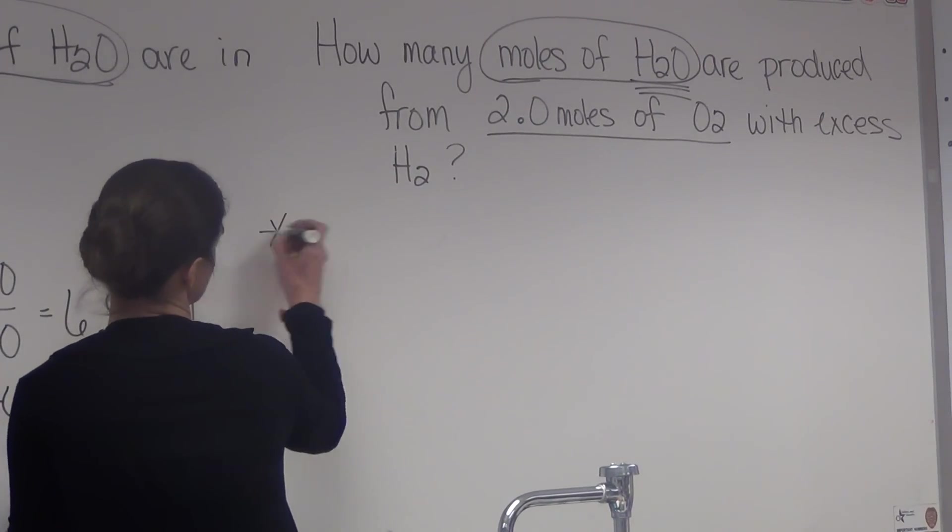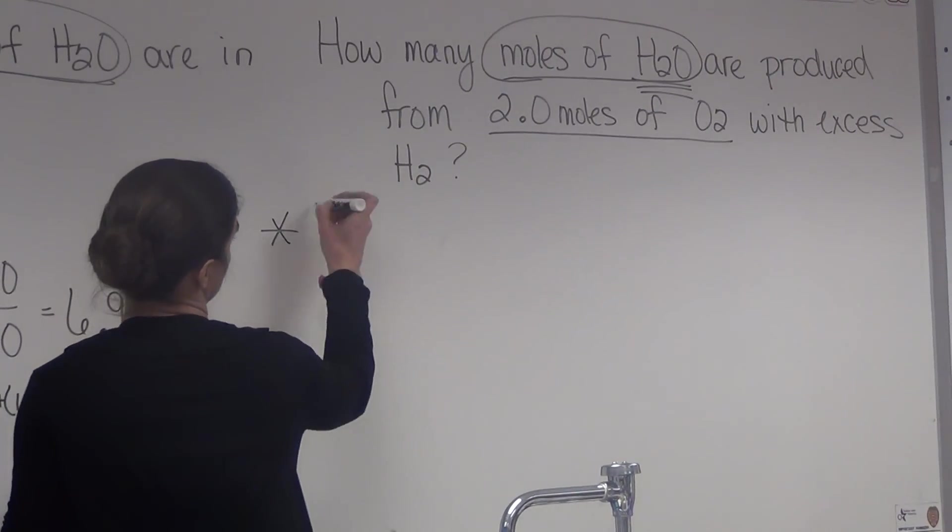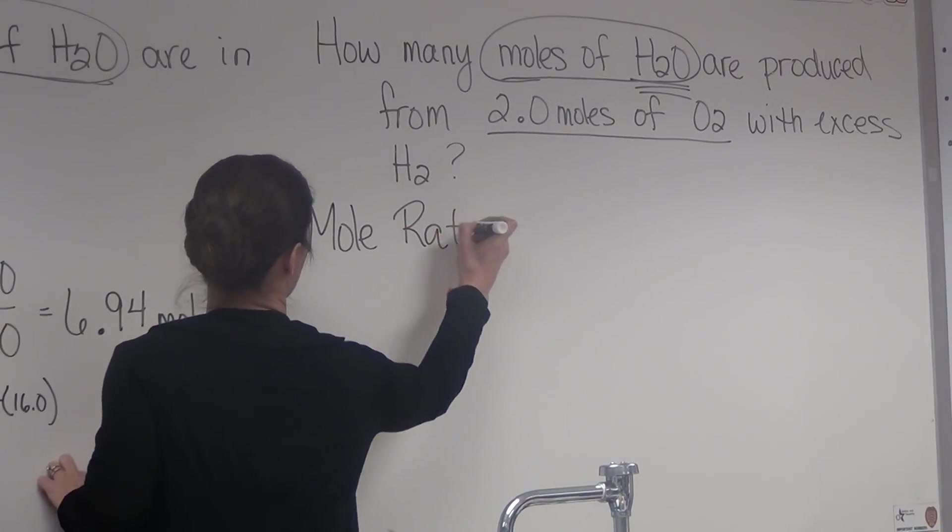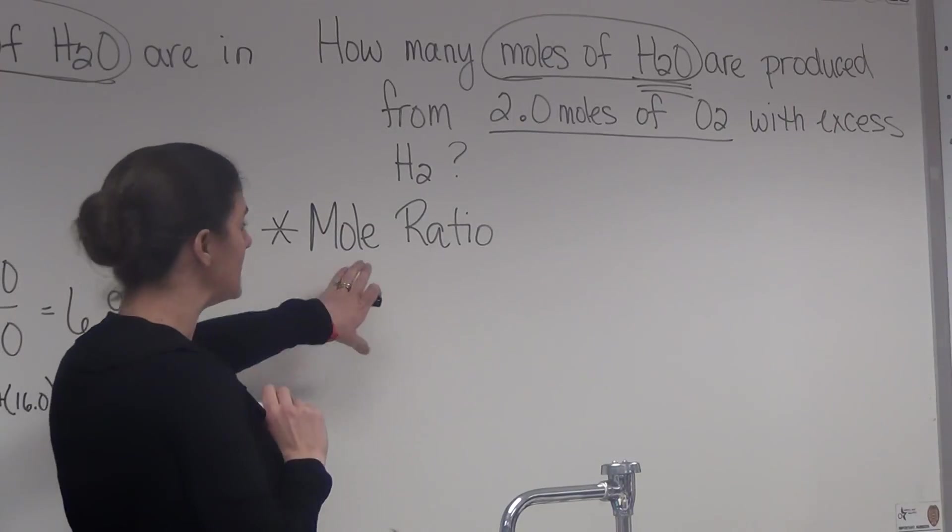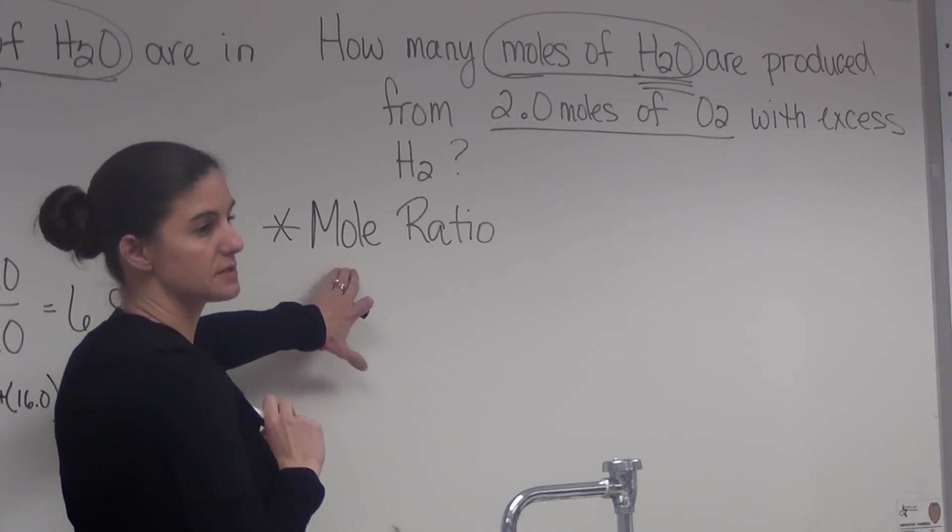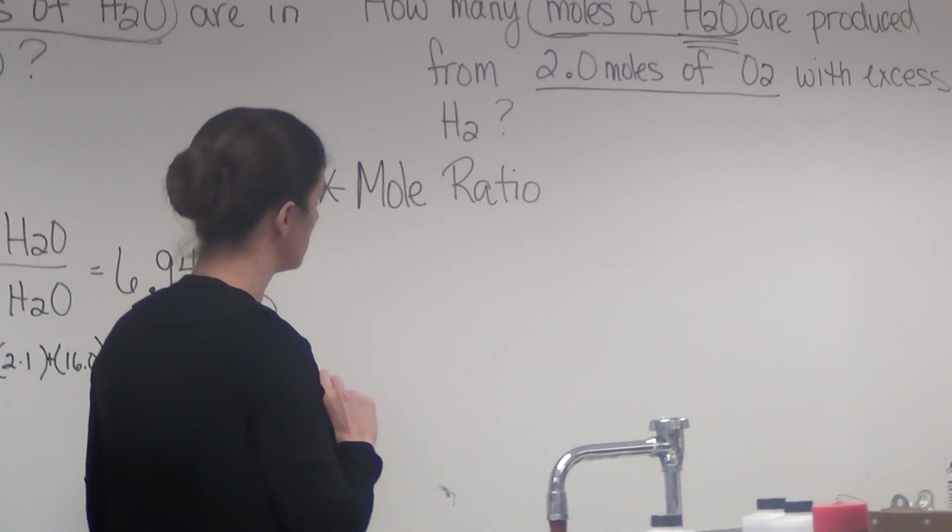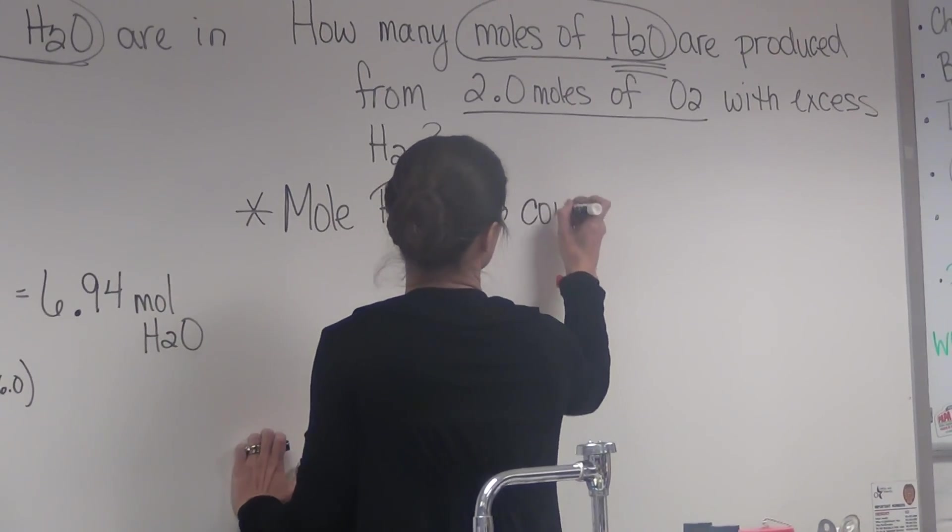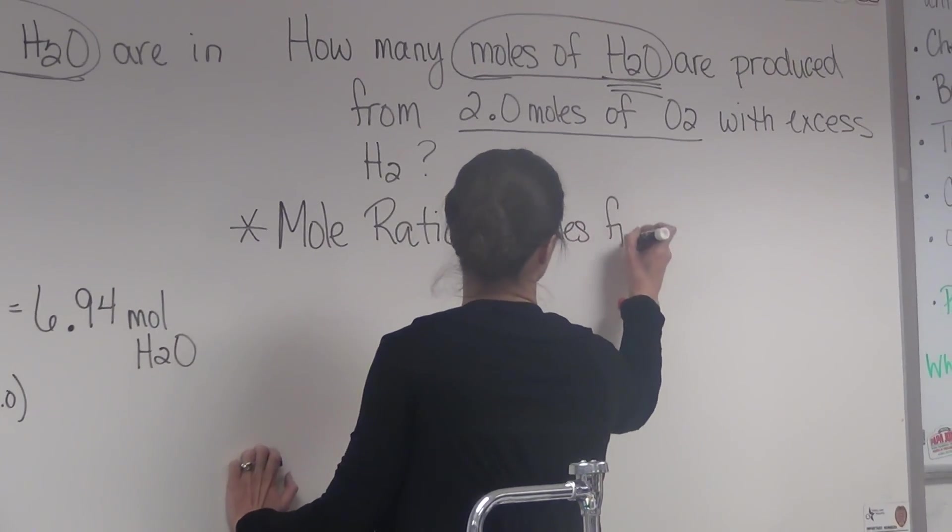And the key here, since there's two different substances, is a term called mole ratio. Any time you have two substances, you have to use a mole ratio. Now, the mole ratio comes from the balanced equation.